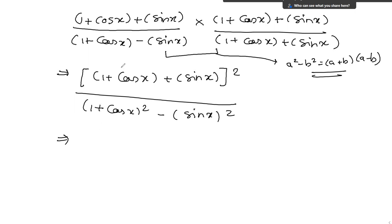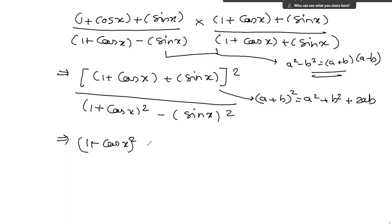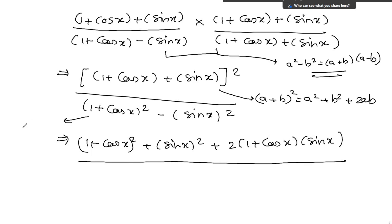Just expand this identity. a plus b to the whole square equals a squared plus b squared plus 2ab. So in the numerator: 1 plus cos x to the whole square — which is a squared — plus sin x to the whole square, that is b squared, plus 2 times 1 plus cos x times sin x. In the denominator, applying the identity: 1 plus cos squared x plus 2 cos x, minus sin x to the whole square.